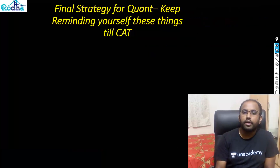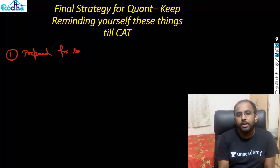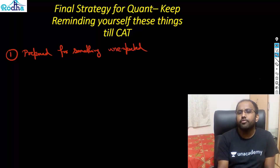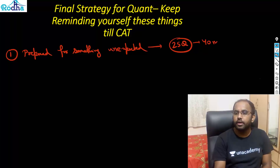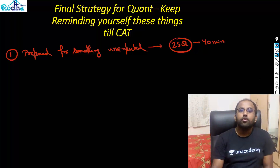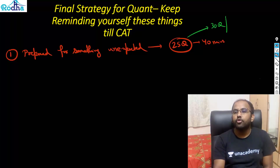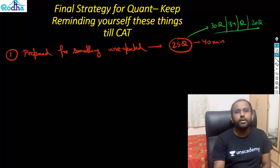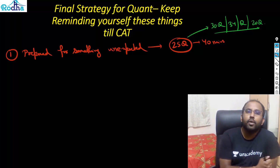Coming to quant — what should we be focusing on right now? First thing: be prepared for something unexpected in quant, just like in LRDI. Normally around 25 questions at similar difficulty in 40 minutes is expected, but CAT never confirmed this. So mentally prepare for 30, 34, or even 20 questions — the probability is less, but be ready for these situations.